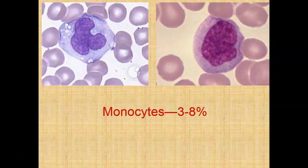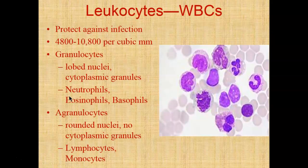Before going into blood typing, here's a memory trick to help you remember the abundance of these cells. Using the first letter of each type — N, E, B, L, M — the mnemonic is: 'Never Let Monkeys Eat Bananas,' from most abundant to least abundant. Neutrophils are the most abundant and basophils are the rarest. Never Let Monkeys Eat Bananas — from most abundant to least abundant.